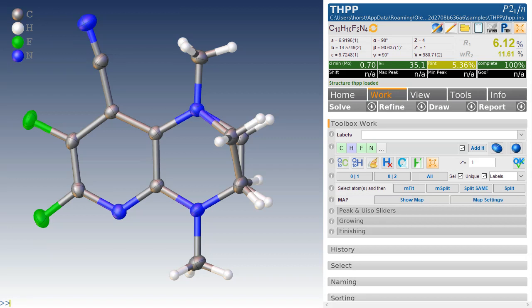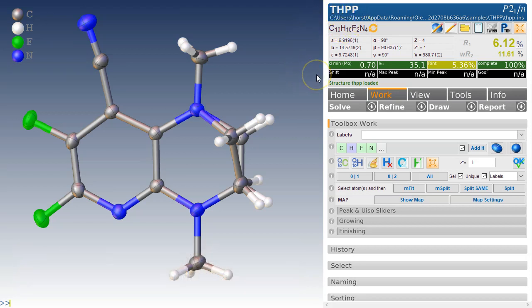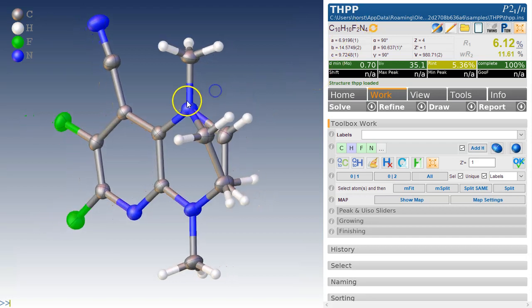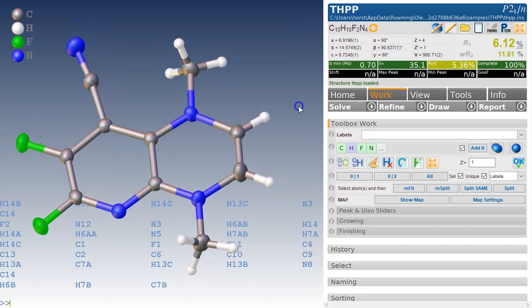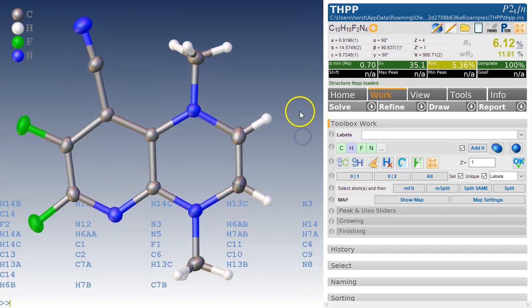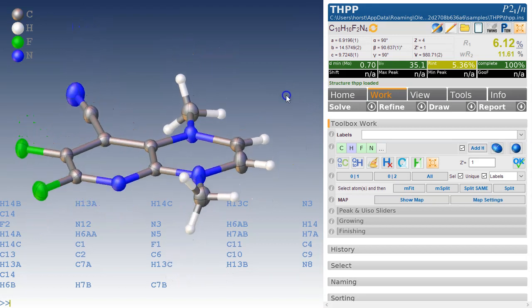Today we will look into disorder modeling in OLEX2 using the THPP example that we've used many times in the past. This is how it is currently shipped in OLEX2 with a very strange disorder of part 0 and part 1 being this one here, and part 0 and part 2 being a different chemical compound. Now the question is, is this actually correct? We will examine this in this video.